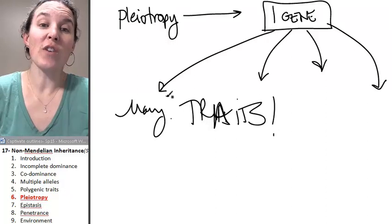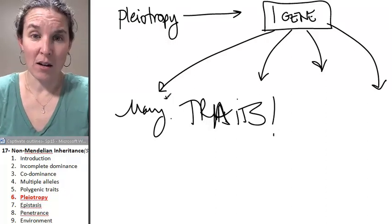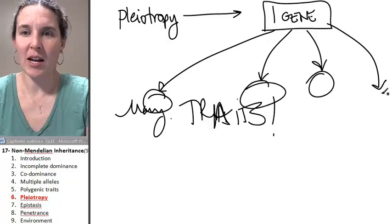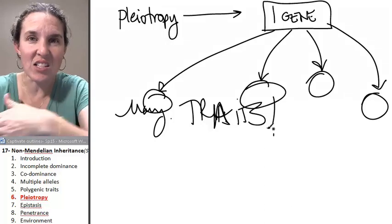So you've got the eye color trait, the hair color trait, the hair curliness trait, and the tongue rolling trait, and one gene does all of it.